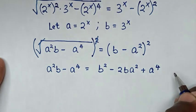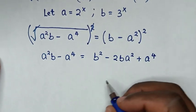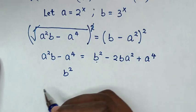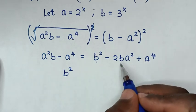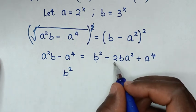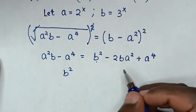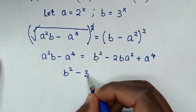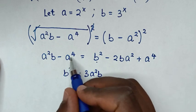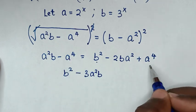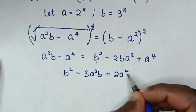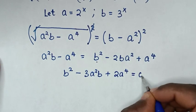Expanding and rearranging: we start with b², then bring the a²b term to this side giving minus a²b minus 2a²b, which is negative 3a²b. The negative a⁴ moves to the other side giving plus a⁴ plus a⁴, which is 2a⁴, and the whole expression equals 0.